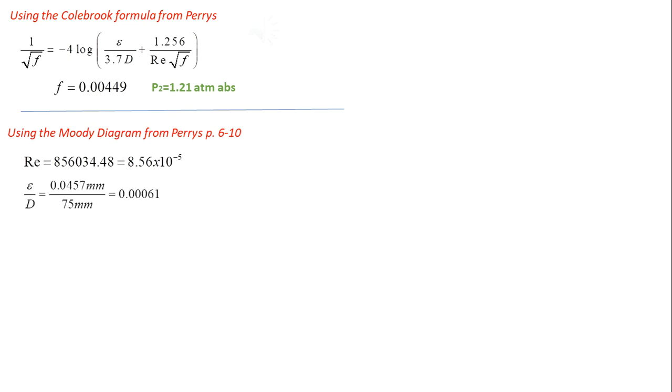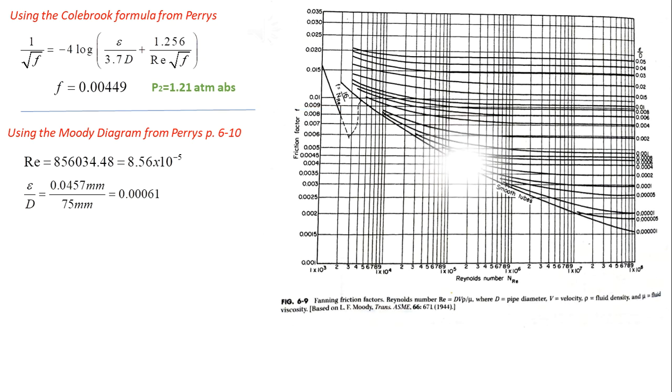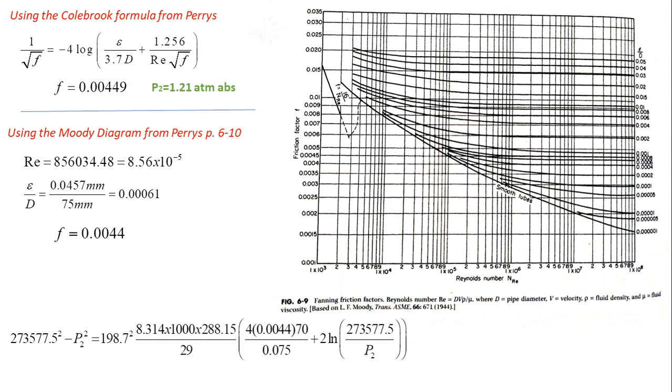If we use the Moody diagram which is also from Perry's, we will have a slight change to the value of f which is now equals to 0.0044. In solving for exit pressure, we have 1.26 atmospheres.